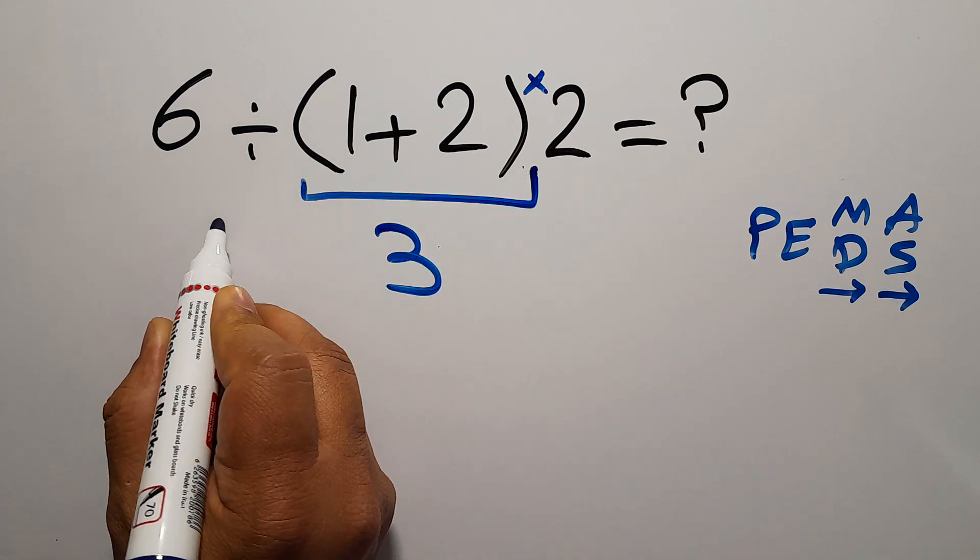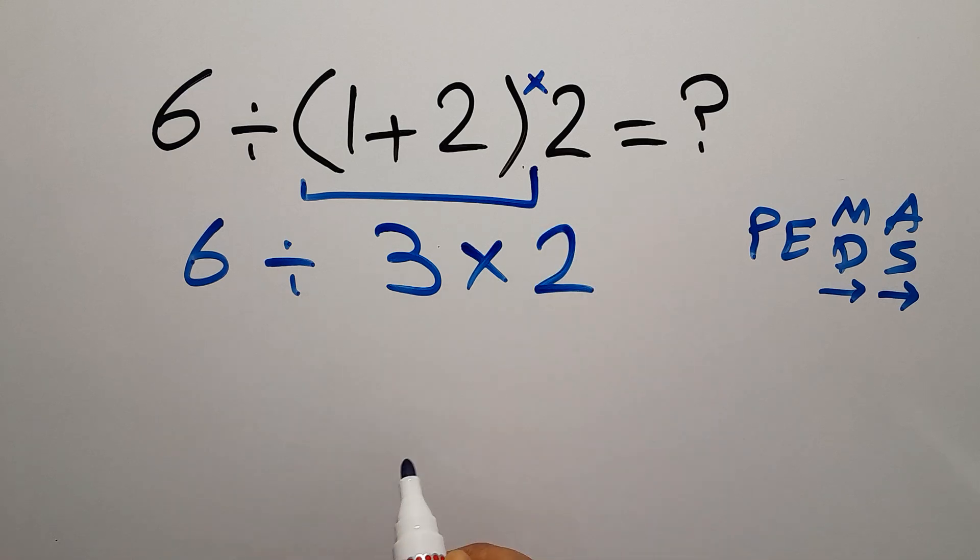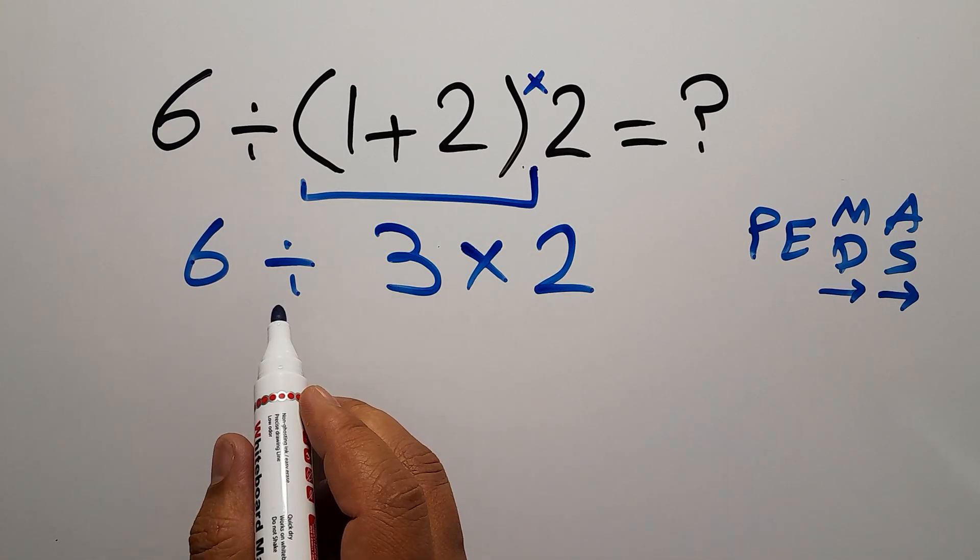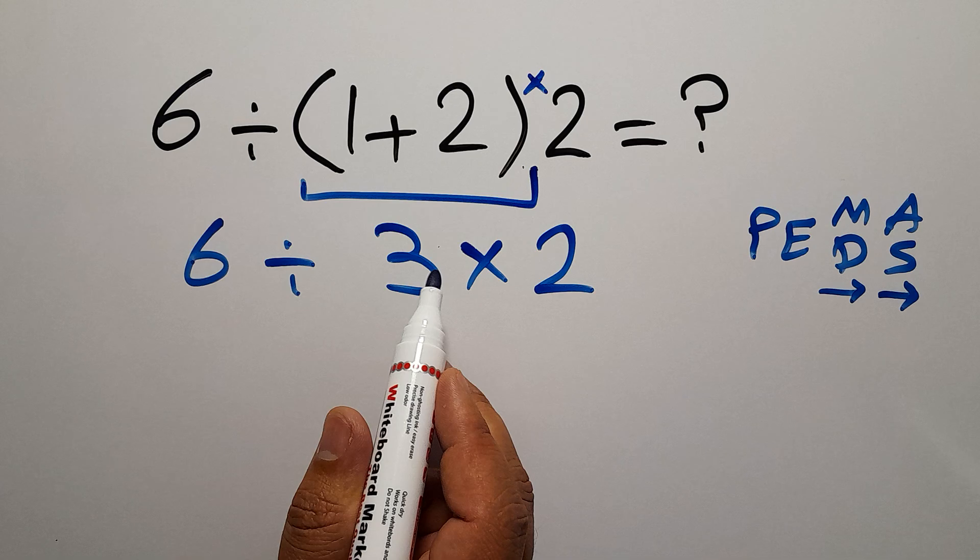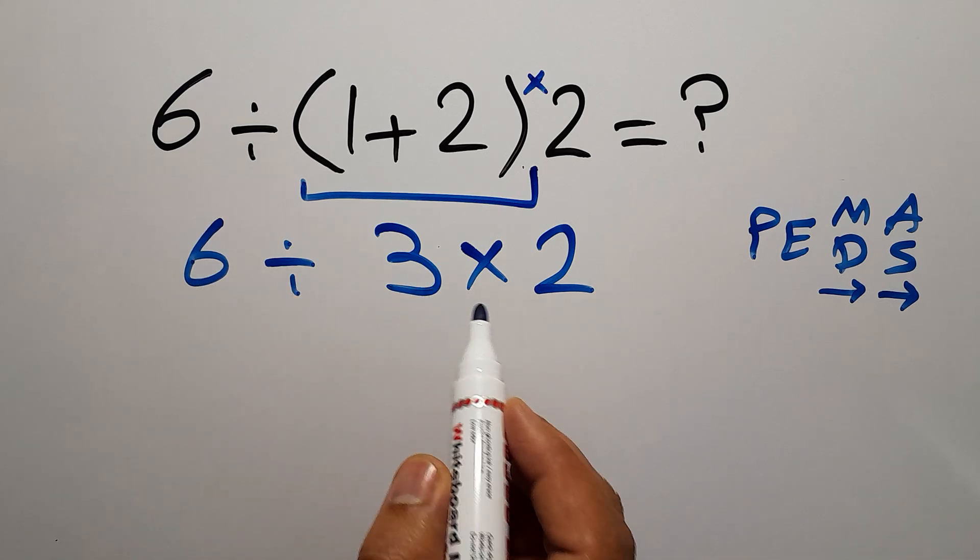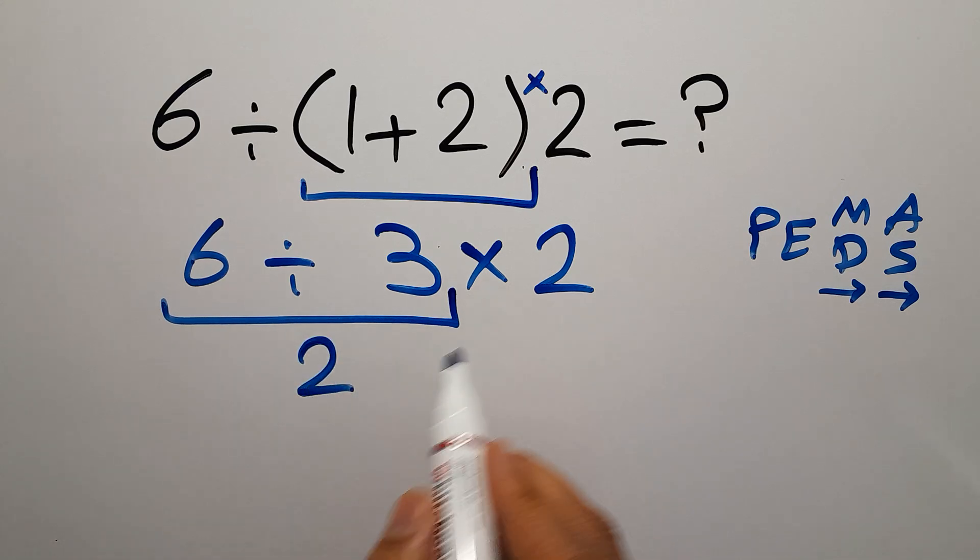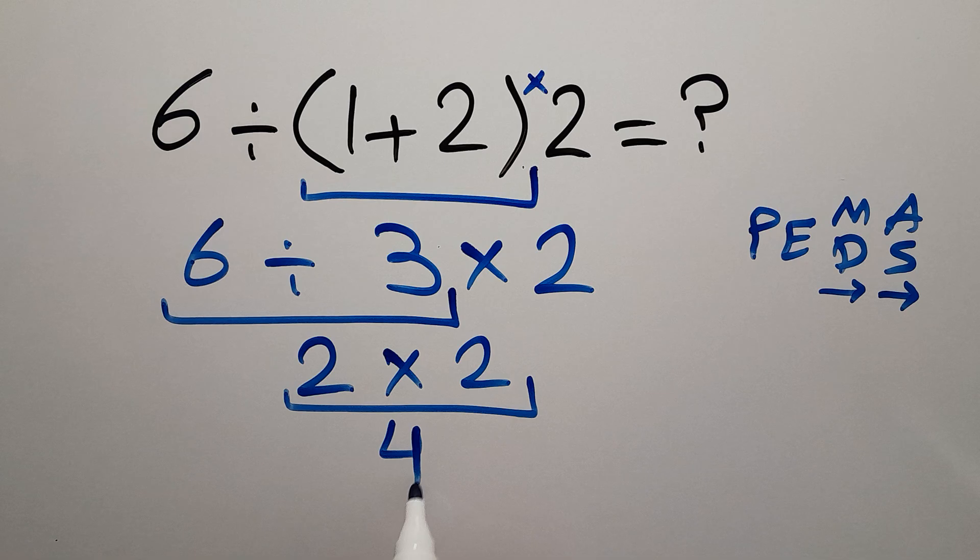So we have 6 divided by 3, then times 2. Multiplication and division have equal priority and we have to work from left to right. So 6 divided by 3 gives us 2, and 2 times 2 which equals 4. So therefore, our final answer to this problem is 4.